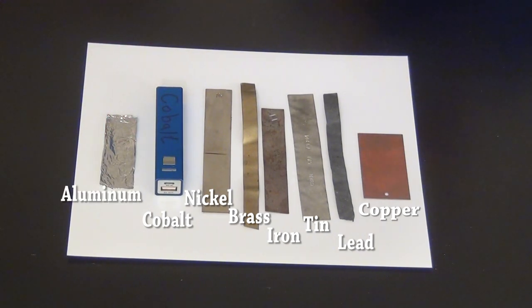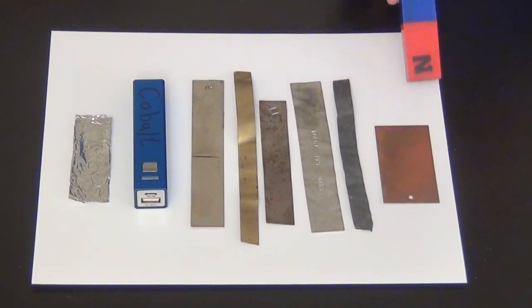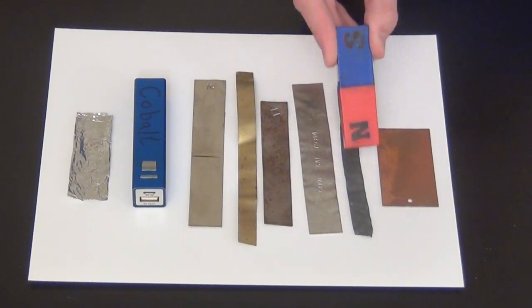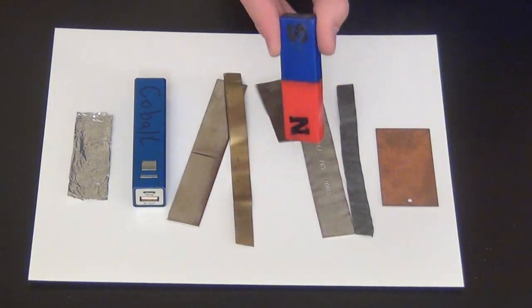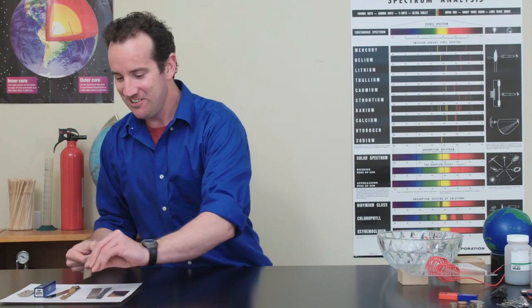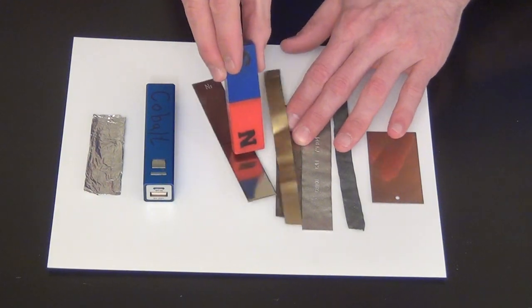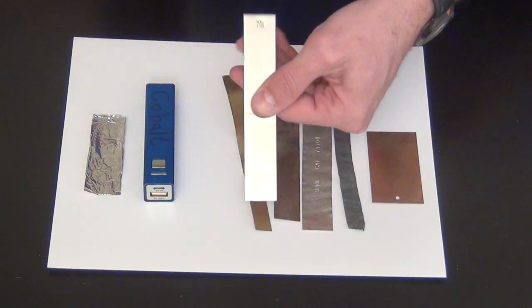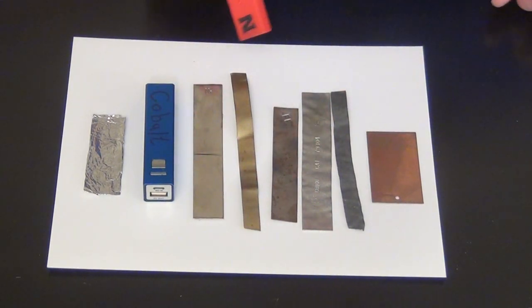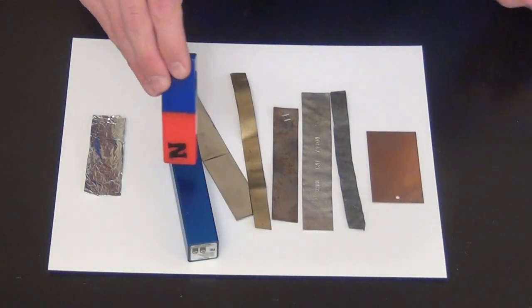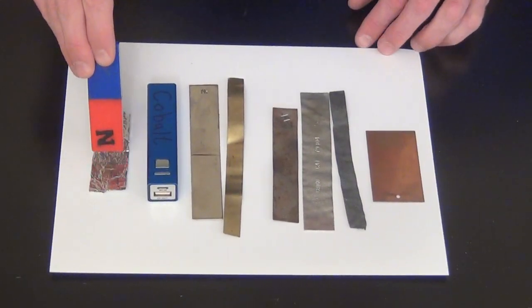So we start off by bringing in the magnet. Copper, no effect. Lead, no effect. Tin, the tin had no effect, but the iron was ready to go. Iron is a magnetic substance. I have to hold it down. Brass, the brass had no effect, but the nickel was ready to go. Nickel is a magnetic substance. And this cobalt is found in rechargeable batteries. The cobalt is ready to go, too. Aluminum has no effect.